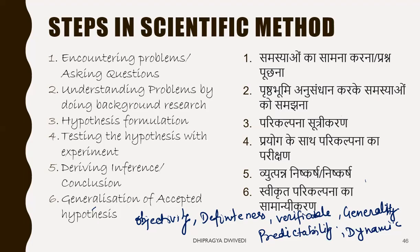Now the most important thing is: what are the different steps in scientific method? The very first step is encountering problems and asking questions. Second is understanding the problem through background research. Third is hypothesis formulation. Fourth is testing of hypothesis with experiment. Fifth is deriving inference. Sixth is generalizing of the accepted hypothesis.